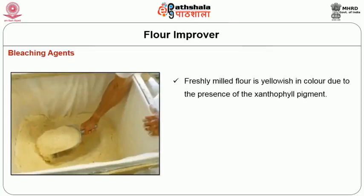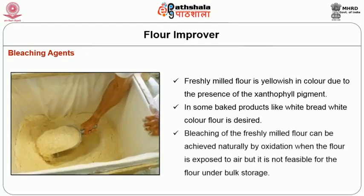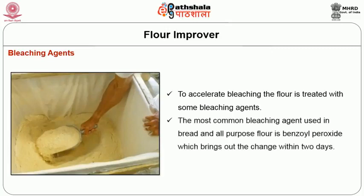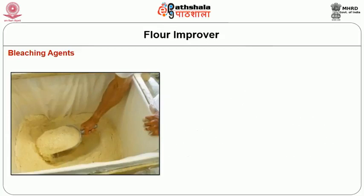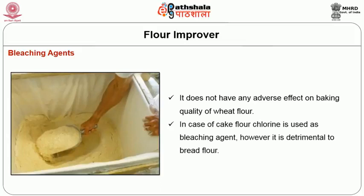Bleaching agents: freshly milled flour is yellowish in color due to the presence of xanthophyll pigment. In some baked products like white bread, white color flour is desired. Bleaching of freshly milled flour can be achieved naturally by oxidation when the flour is exposed to air, but this is not feasible for flour under bulk storage. Hence, to accelerate bleaching, it is treated with bleaching agents. The most common bleaching agent used in bread and all purpose flour is benzoyl peroxide, which acts within two days, used in dry powder form, and does not adversely affect baking quality. For cake flour, chlorine is used as a bleaching agent; however, it is detrimental to bread flour.